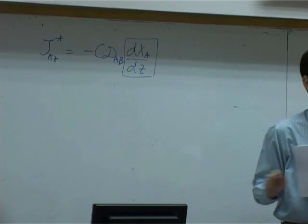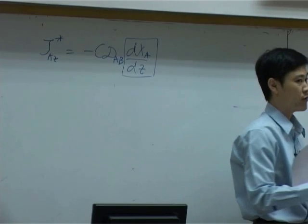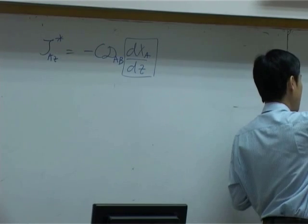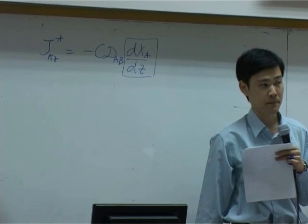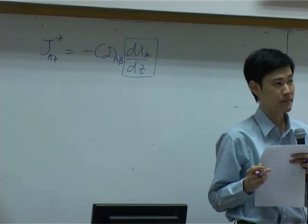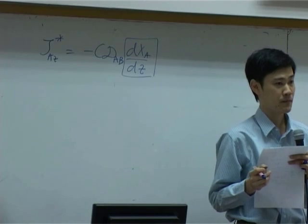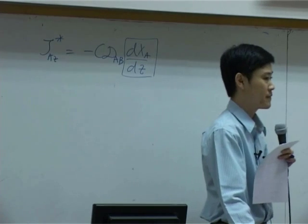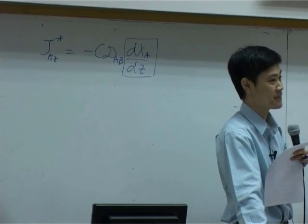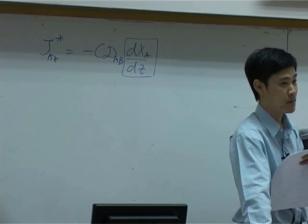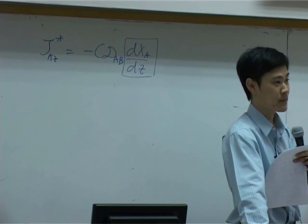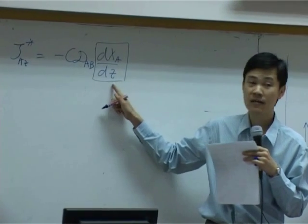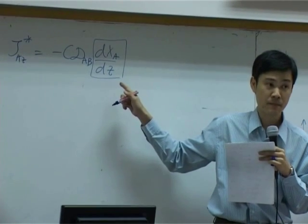If I use the length of a vector to represent magnitude, which vector is longer — the one at the bottom or the one at the top? The magnitude of J_A* depends on the differentiation dX_A/dZ. So if you plot between Z and X_A, you need to determine the slope at different positions.